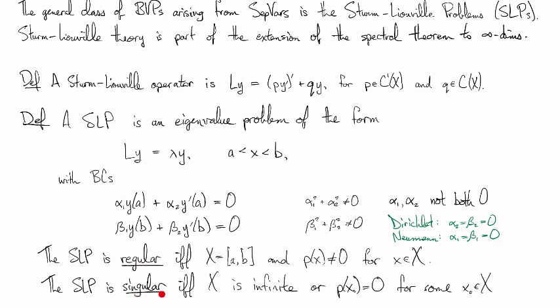A singular problem occurs if we have that x is an unbounded interval, or that p has a 0 somewhere in the domain. In the case when x is an unbounded interval, the boundary conditions are understood in terms of limits.